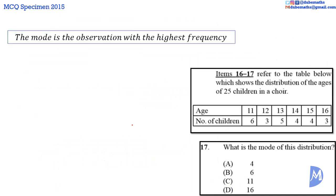Question 17. The mode is the observation with the highest frequency. The frequency of children age 11 is 6. The frequency of the children age 12 is 3. And so on. The highest frequency is 6. 6 children are 11 years old. The mode is age 11. The answer is C.